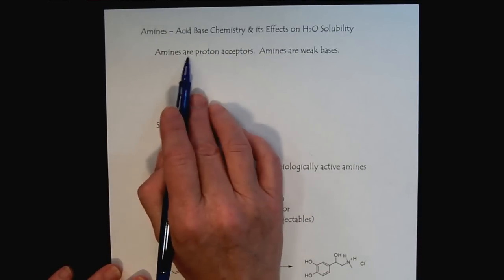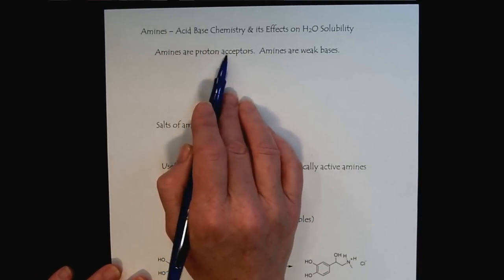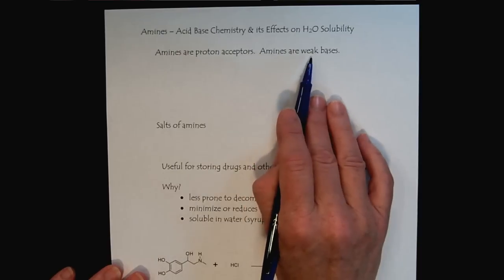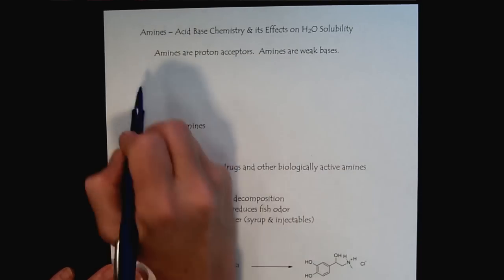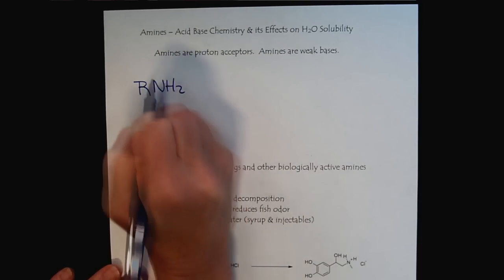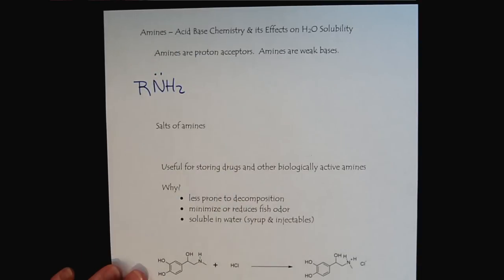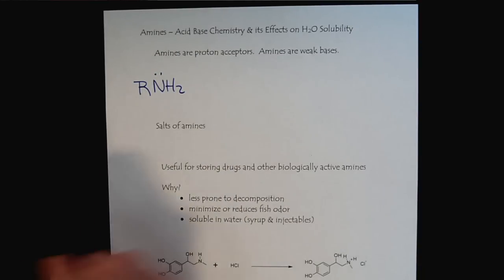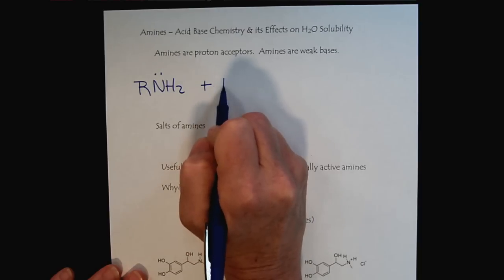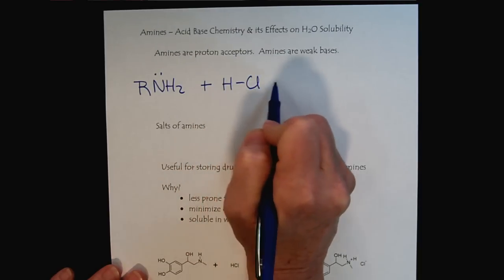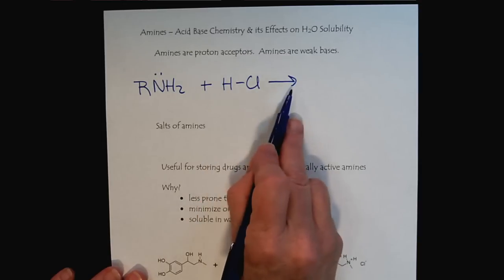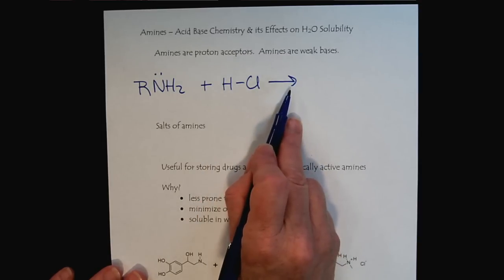Now amines are proton acceptors, so that's a base, and particularly they're weak bases. We'll draw a generic structure for an amine, a primary amine to keep things simple, and then we will react that with an acid, such as hydrochloric acid. Because hydrochloric acid is a strong acid, we will show a complete reaction arrow.